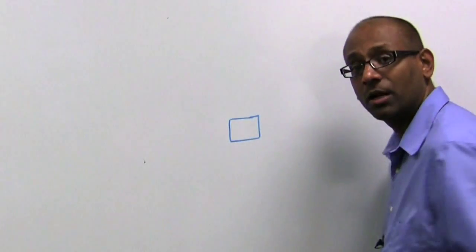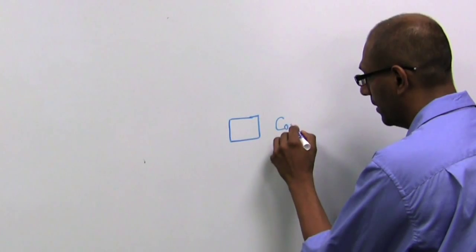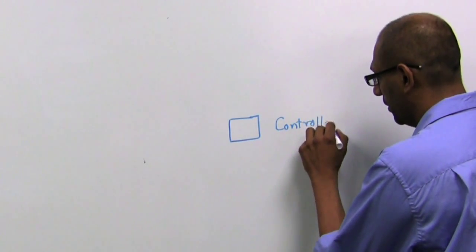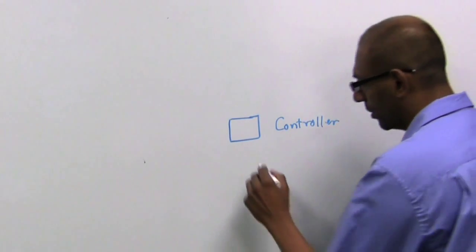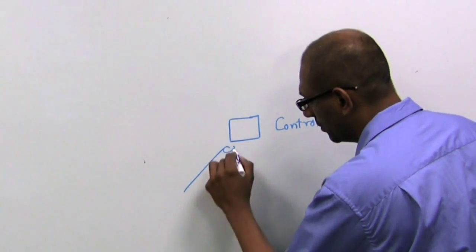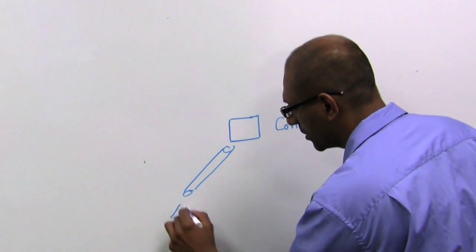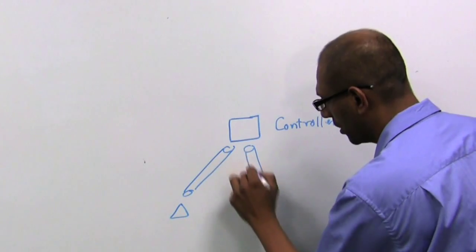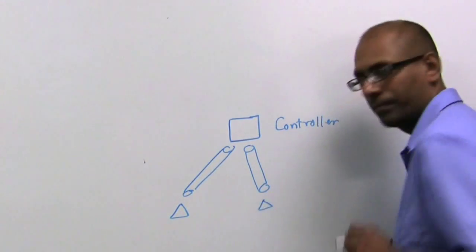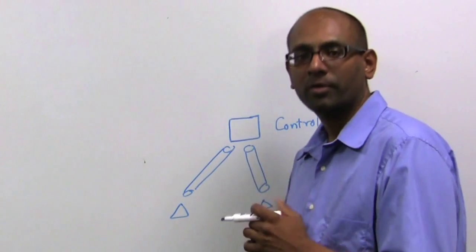And I'm going to draw first a logical picture of the Meru wireless LAN. There is a controller, and the controller connects to access points, which might be either local or remote, through either layer 2 or layer 3.